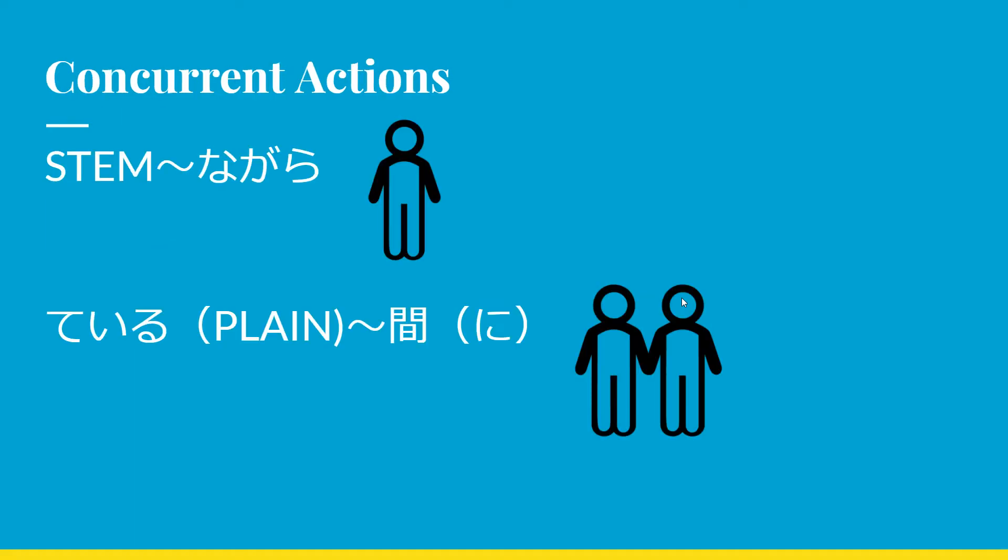Now, sometimes things happen concurrently — at the same time. Simultaneous means at that exact same moment, while concurrent means within the same span of time — a slight difference in English. To do two actions concurrently, we use stem form plus ながら, or て いる 間に. Usually te iru form, but plain form 間に works too. You can use the dictionary form or nai form as well.